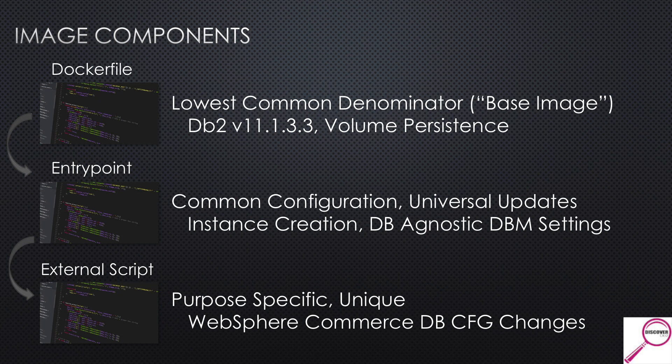Although my very first image came from a single large Dockerfile, as it matured it broke into three parts. The Dockerfile became the lowest common denominator — the base image — which was simply: install DB2 and get some file systems mounted. After that, I broke out configuration changes into an entry point script and an additional script. Common configurations across all databases went into the entry point script, while WebSphere Commerce-specific changes went into a third external script. So the Dockerfile called the entry point, and the entry point called the external script.